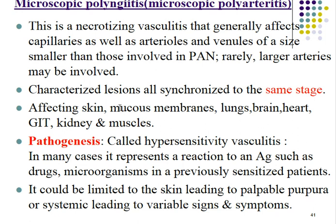This vasculitis affects skin, mucous membranes, lung, brain, heart, gastrointestinal tract, kidney, and muscle. Regarding pathogenesis, it is named hypersensitivity vasculitis because in many cases it represents a reaction to an antigen such as a drug or microorganism in a previously sensitized patient. It could be limited to the skin or be a systemic condition leading to variable signs and symptoms.